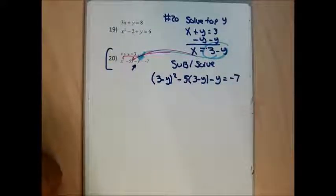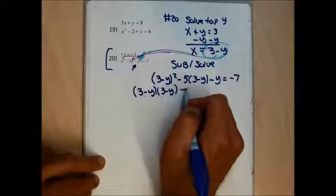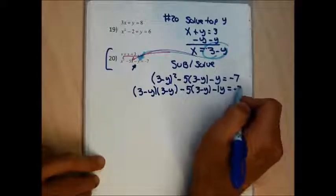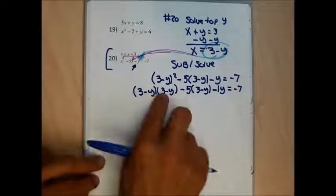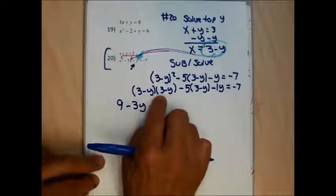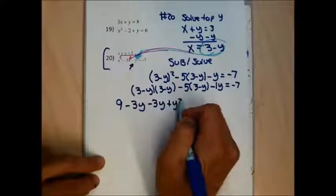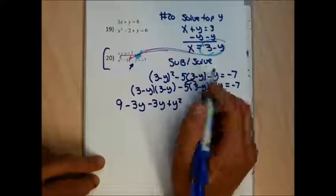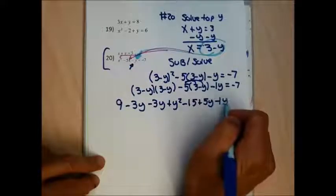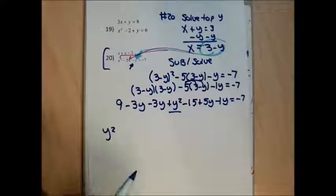Continuing to solve problem 20: foiling (3 − y)² gives 9 − 3y − 3y + y² = 9 − 6y + y². Distributing −5(3 − y) gives −15 + 5y. Combining all terms with the −1y and the right side of −7, I collect like terms: the y² term is written first, then combine the y terms and constants. The solution process continues to set up for factoring.